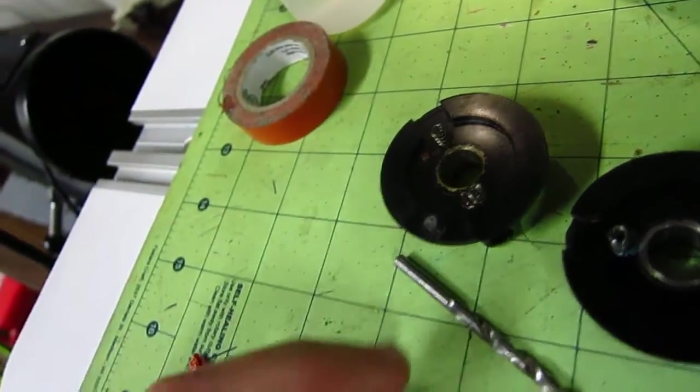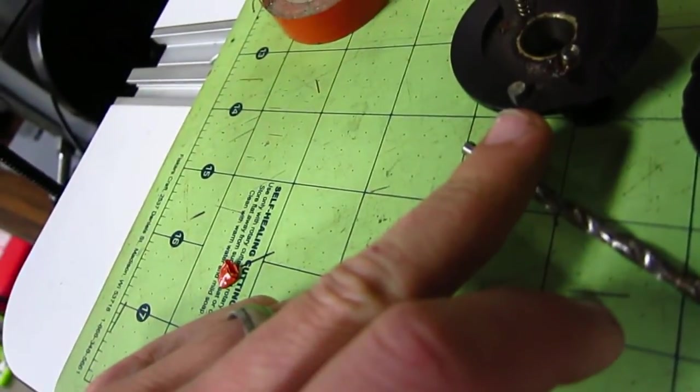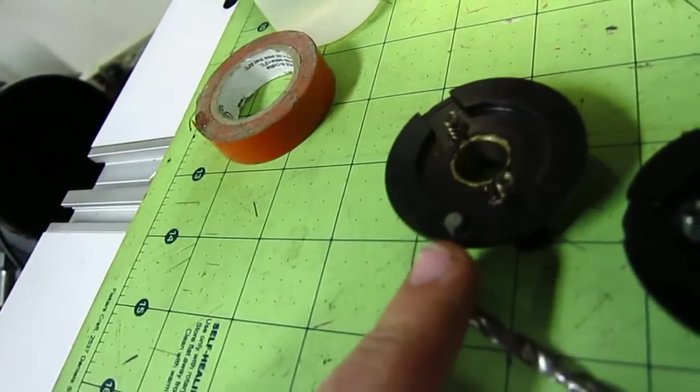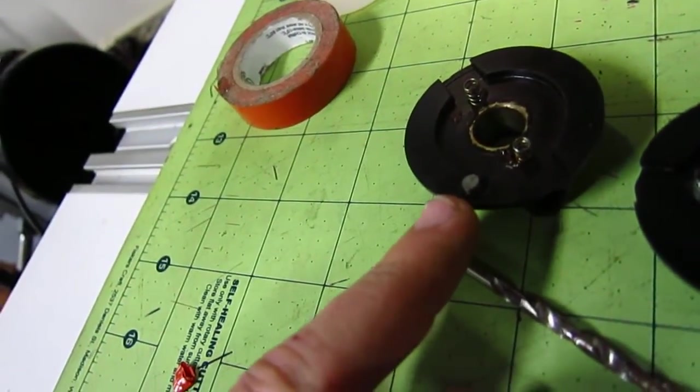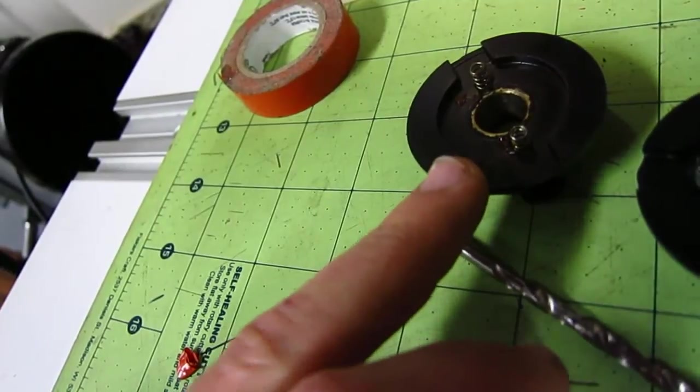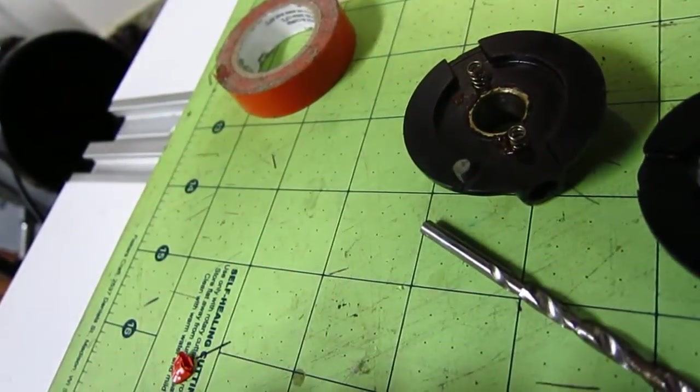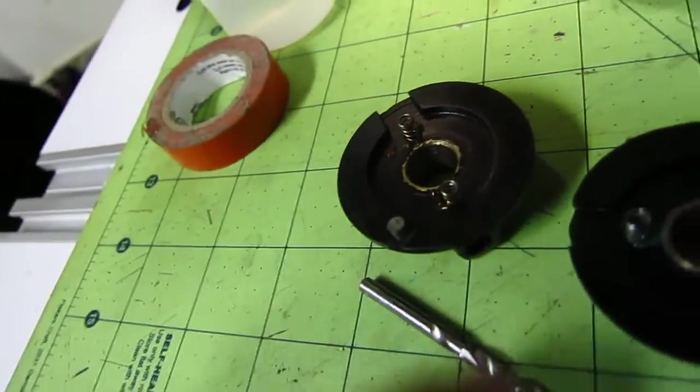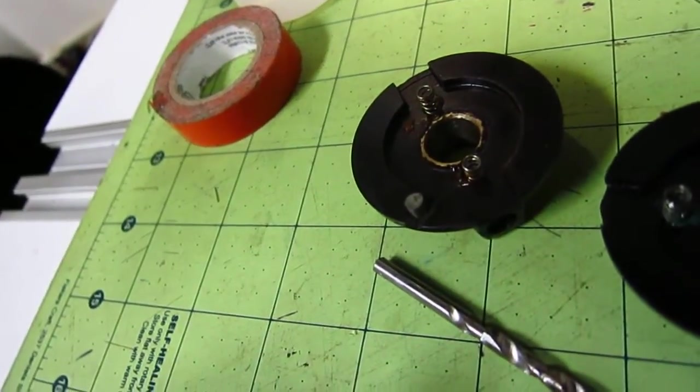I'm going to smooth out the epoxy around it, even if it's a little bit high. Then I'll go through with a little file or sandpaper and clean up the surrounding area. Hopefully that'll be strong enough with the epoxy in there.